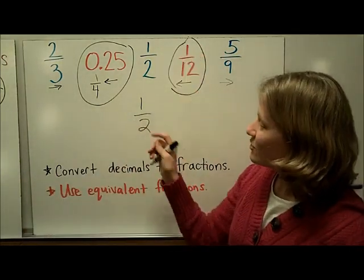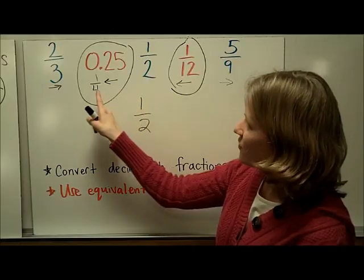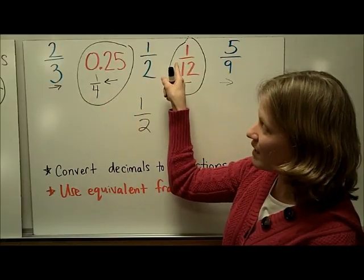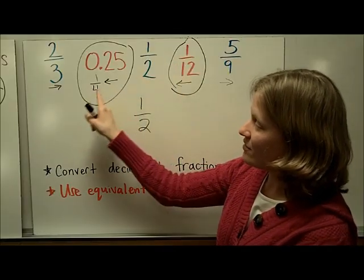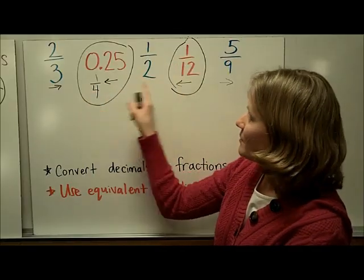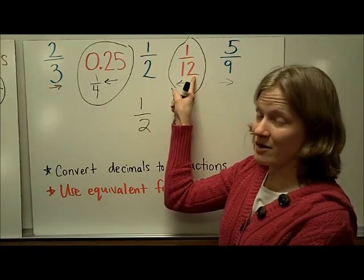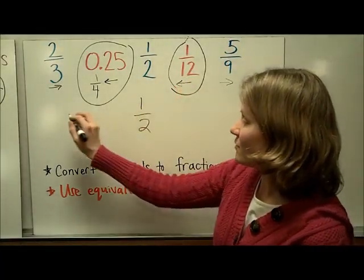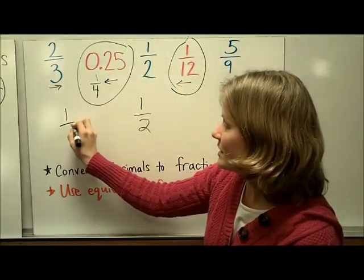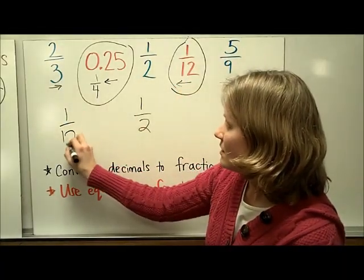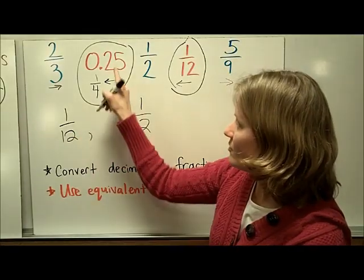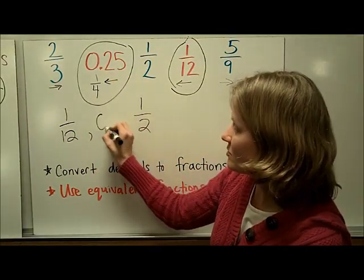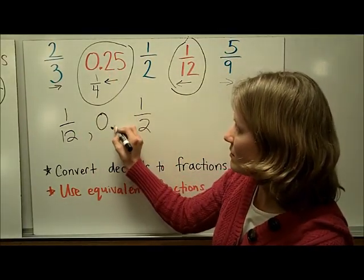Now I'm going to compare the two that are less than one half: one fourth and one twelfth. The bigger denominator means a smaller piece, so one twelfth is going to be less, followed by one fourth — but I have to write it as the decimal that I started with.